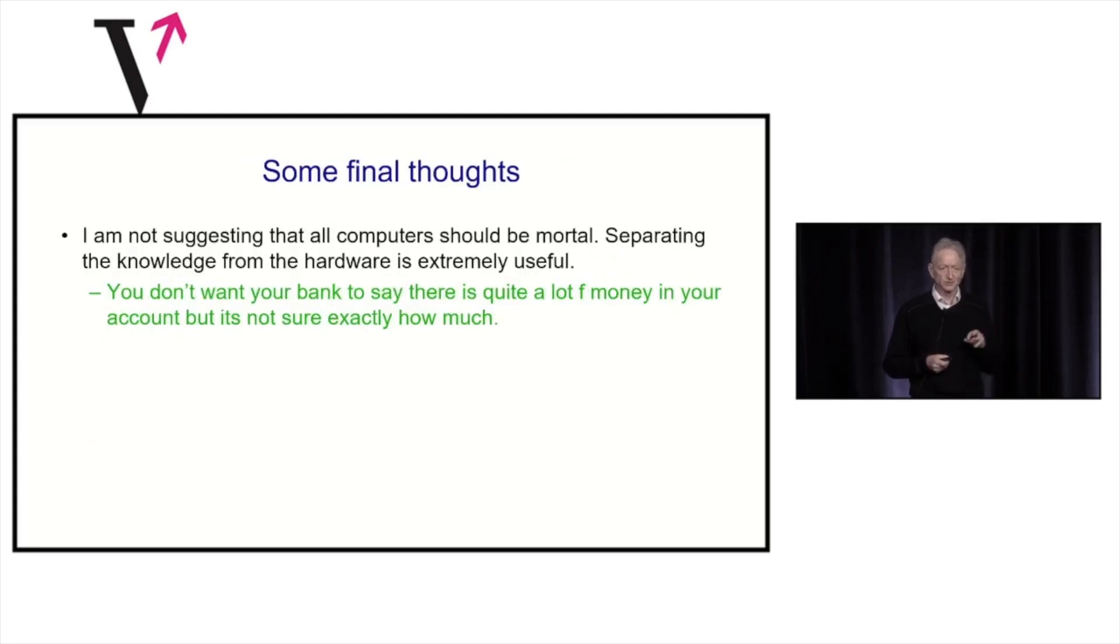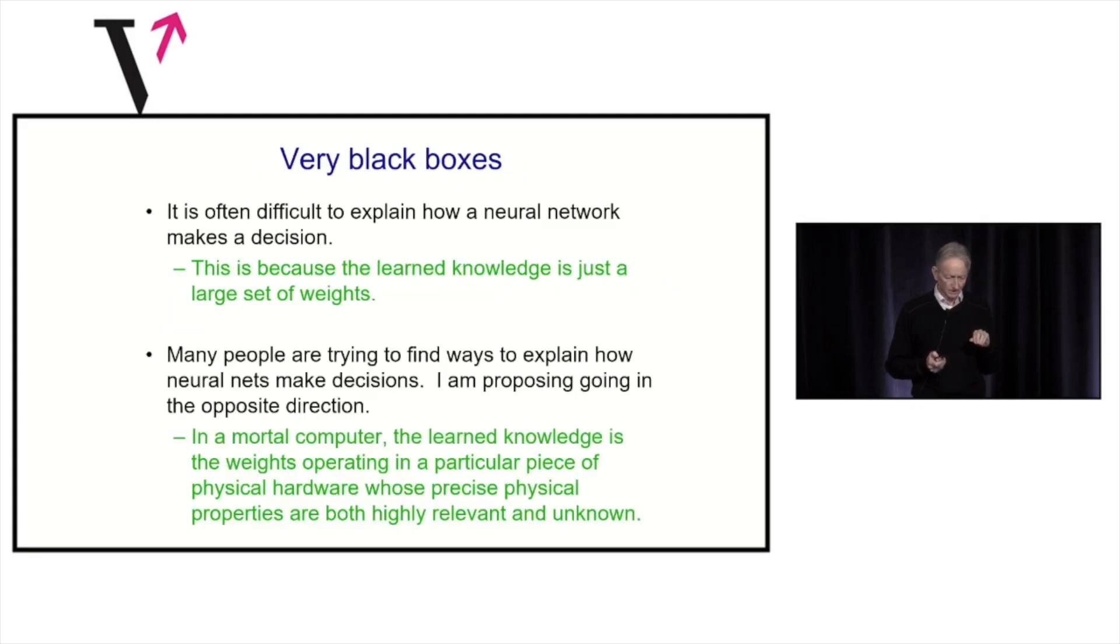I'm not suggesting all computers should be mortal. I think just ones that need to be very cheap to fabricate, very cheap to run, disposable, but need to have the kind of knowledge that GPT-3 has. I'm going in an opposite direction to most people. Most people want to take neural net black boxes and make them explainable. I'm taking neural net black boxes in which currently the weights and the hardware are separable and saying they're really inseparable in these mortal computers because you want to make use of all the weird analog properties of the hardware. And so the boxes are going to get much blacker.